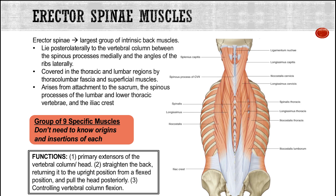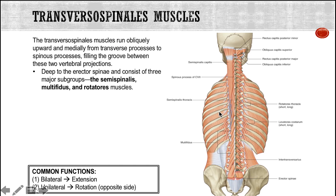Looking at individual erector spinae muscles: the most medial, running at roughly a 45-degree angle, is the spinalis thoracis. Immediately lateral is the longissimus group — longissimus cervicus in the cervical region and longissimus thoracis in the thoracic region. Even more lateral is the iliocostalis muscle, which as the name suggests runs from the ilium and inserts onto the ribs. Stripping all of that away reveals the fine intrinsic transversospinalis muscles, running obliquely upward and medially from the transverse processes to the spinous processes, filling the groove between these two vertebral projections.